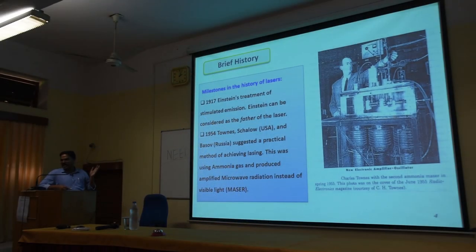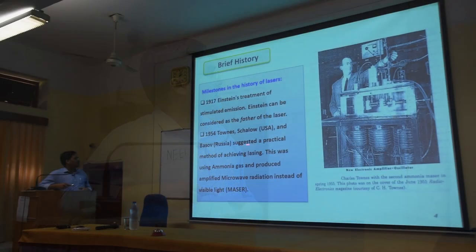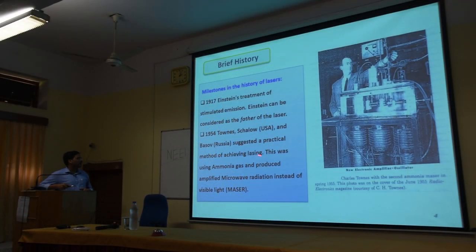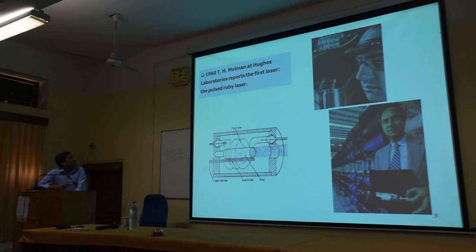Tracing back the history of laser: the concept related to laser was first given by Albert Einstein in 1917. Before the laser was invented, a major device — MASER, Microwave Amplification by Stimulated Emission of Radiation — was produced by Townes and collaborators, who suggested a practical chemical method of achieving lasing oscillation using ammonia gas. Thereafter, in 1960, the first laser — a ruby solid-state laser — was invented by T.H. Maiman.